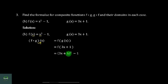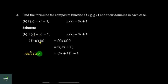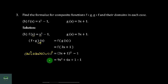Now, I will tell you that the whole square is 3a squared. Now, I will tell you that the whole square is 2 into 3a into 1 plus 1 squared. Now, I will tell you that the whole square is 9a squared plus 6a plus 1.